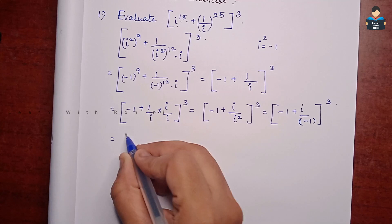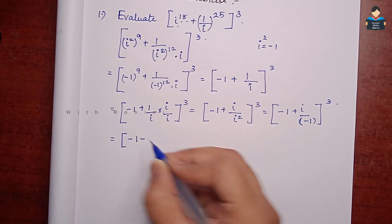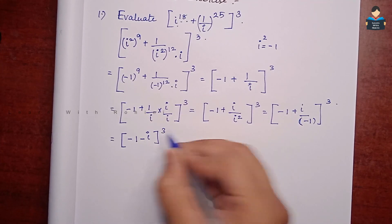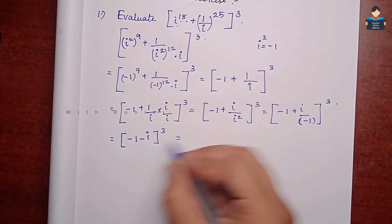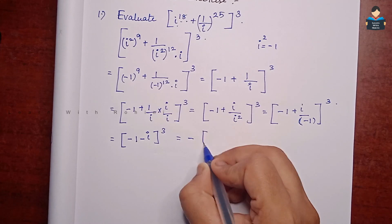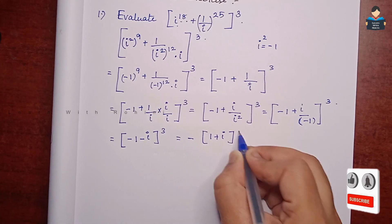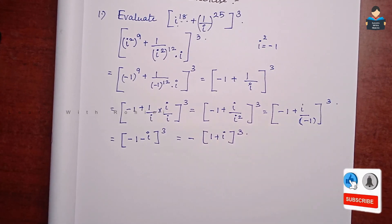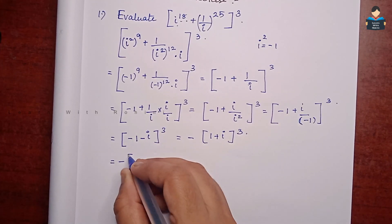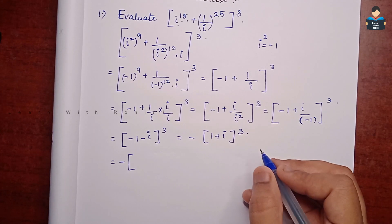Simplifying further, i square is minus 1, so we get minus 1 plus i by minus 1, the whole cube. This gives us minus 1 minus i, the whole cube. Now we will substitute using the (a plus b) whole cube formula.